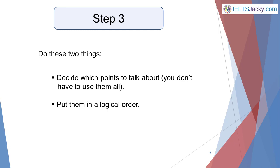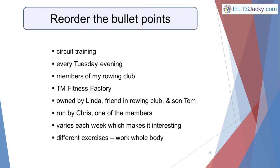Spend the remainder of your one minute planning time organising your notes — this is the third step. Do these two things: decide which points to talk about (you don't have to use them all), and put them in a logical order. Here are the first eight bullet points in my reorganised list. You can see the full list on the website. You can get a general feeling for the way they now flow from one to another: Circuit Training, Every Tuesday Evening, Members of my rowing club, TM Fitness Factory, Owned by Linda, friend in rowing club, and son Tom, Run by Chris, one of the members, Varies each week which makes it interesting, Different Exercises, Work Whole Body.